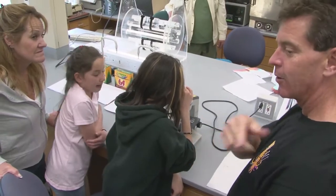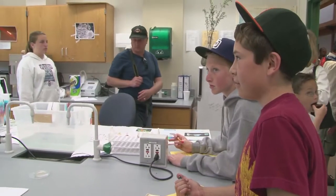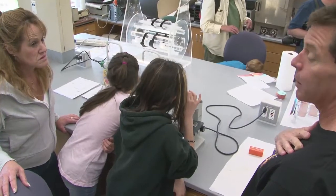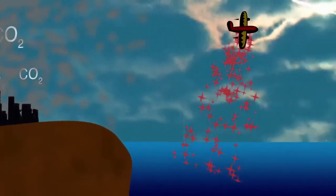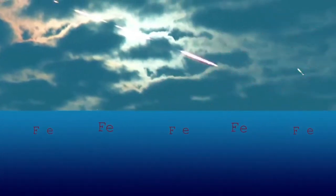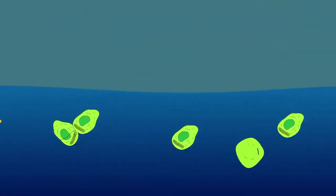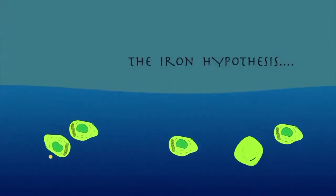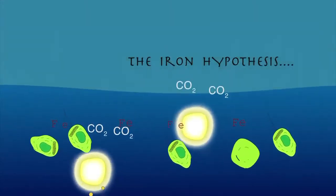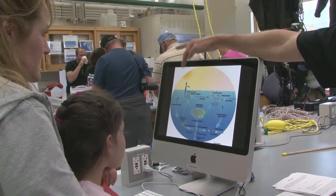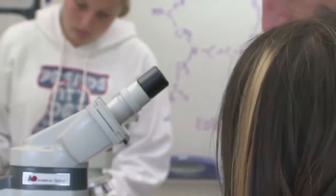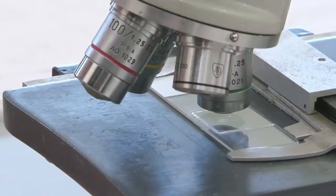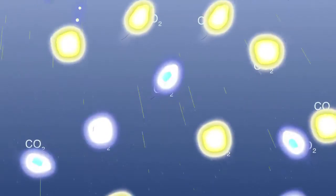So one of the things the chemical oceanography lab worries about here is what controls phytoplankton growth. Kent can tell you about his research, which was about, among other things, fertilizing the ocean with iron to promote growth of phytoplankton to absorb carbon dioxide. So it's important to take care of the phytoplankton — we don't want to kill them. It's important to understand where they are, what they're doing, how they grow, when they grow.